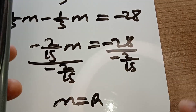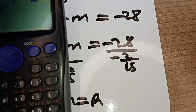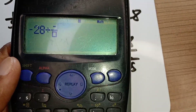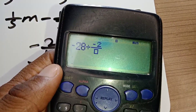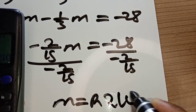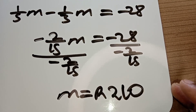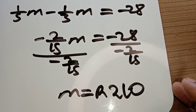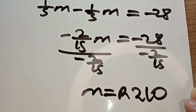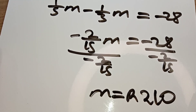We divide negative 28 by negative two over fifteen and we get our answer. That means Mary originally had this amount. We have answered the question. If you have any questions you can ask.